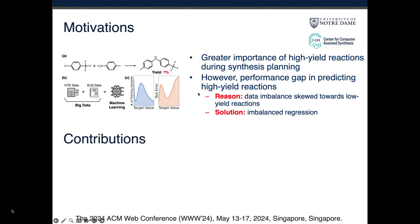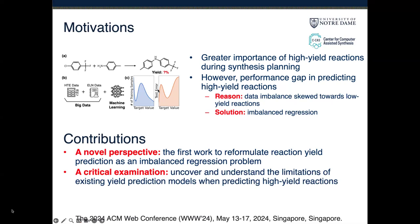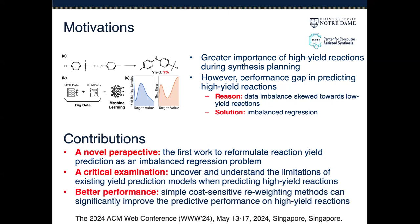Let me introduce the contributions of our work. First, it introduces a novel perspective — this is the first work to reformulate reaction yield prediction as an imbalanced regression problem. Second, we have conducted a critical examination. Through comprehensive experiments on three real-world yield prediction datasets, we have uncovered and understood the limitations of existing yield prediction models when predicting high-yield reactions.